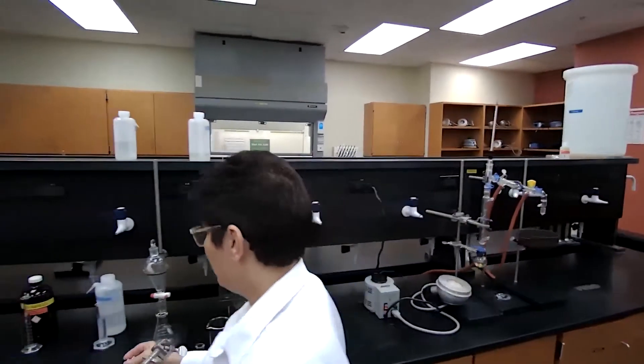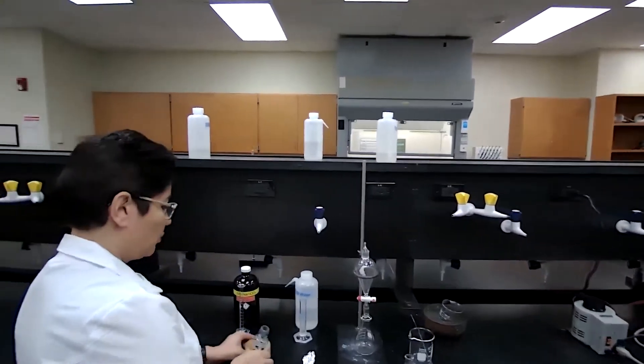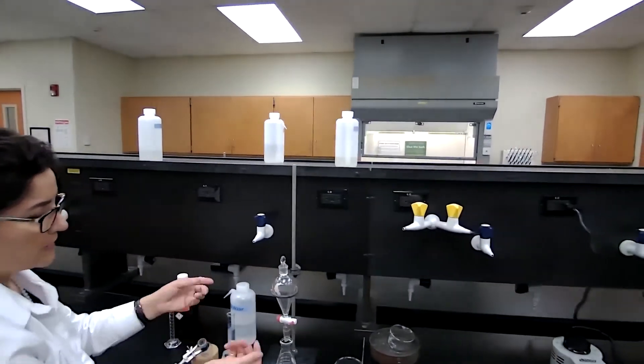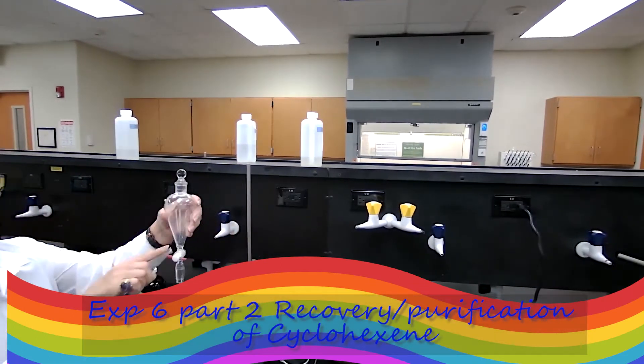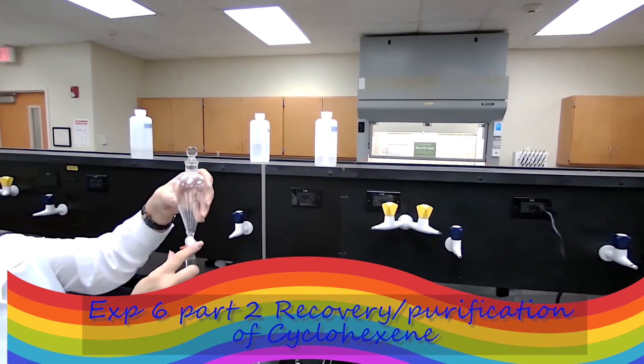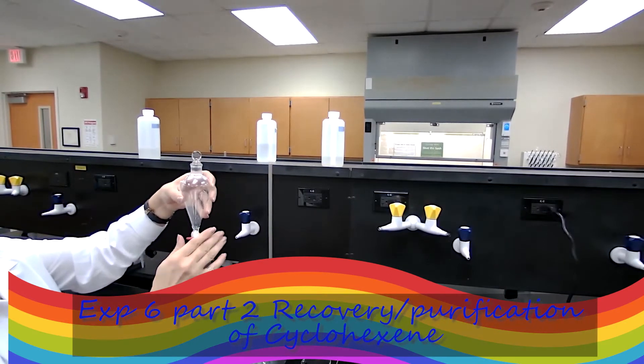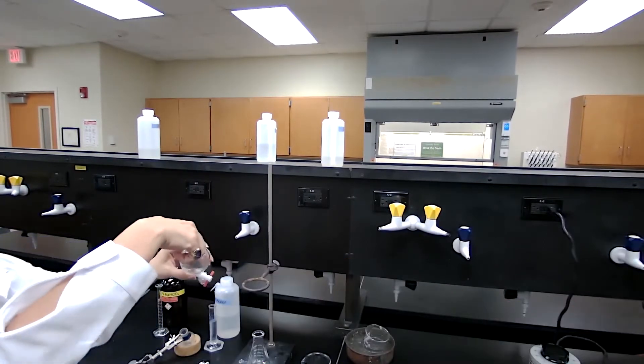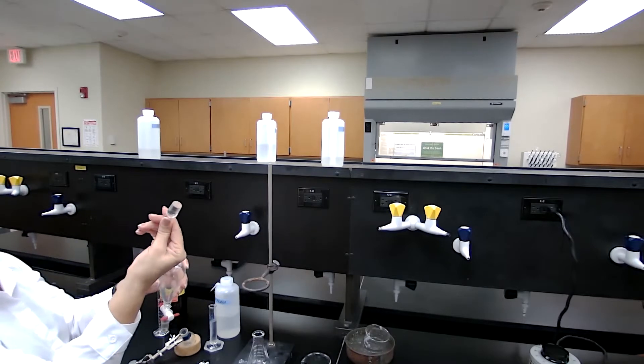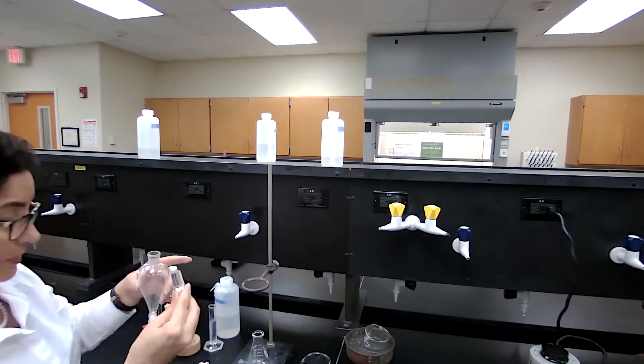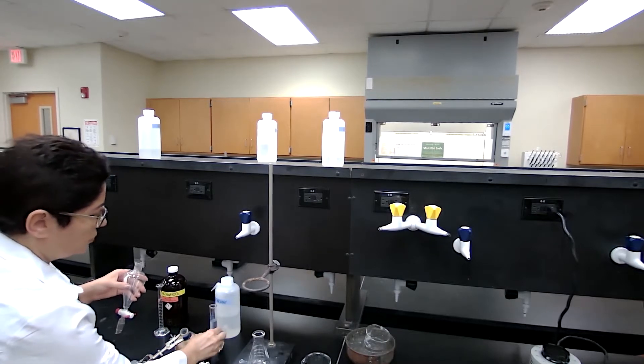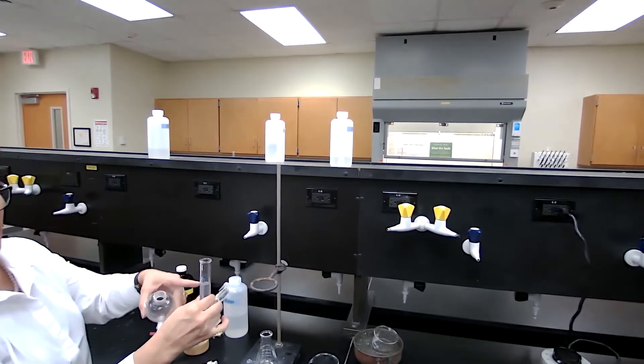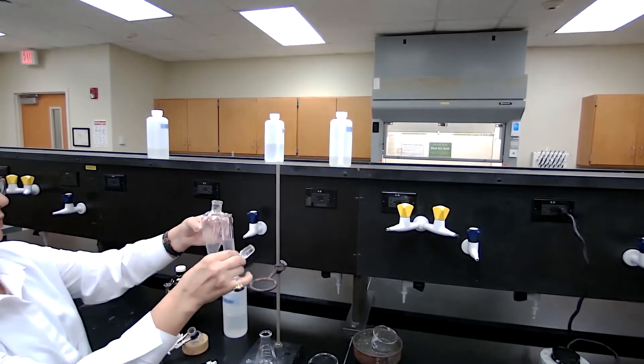I want to make sure our separating funnel is working properly, so I'm going to test that. Make sure that the stopcock is in the horizontal closed position. The glass stopper must be greased properly, and I'm going to mix this with 20 milliliters of cold water, which are already measured.